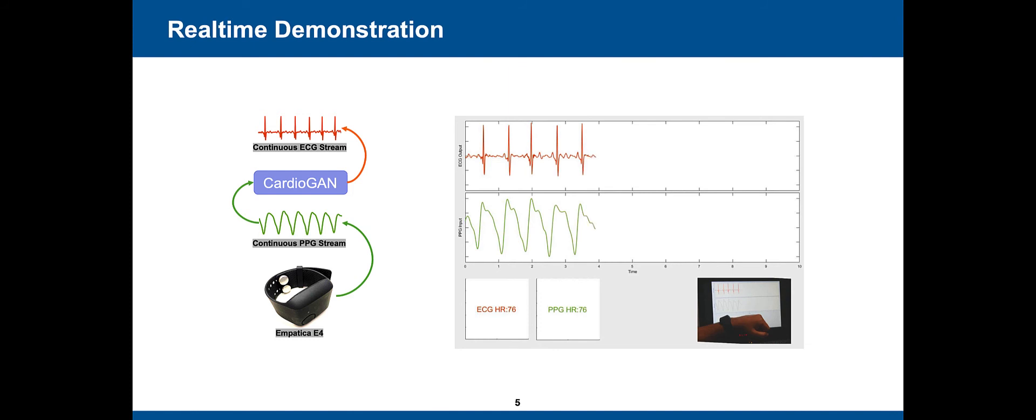CardioGAN then converts the incoming PPG to their corresponding ECG waveforms. The bottom plot shows the incoming real-time PPG, and the plot at the top shows the generated ECG outputs over a 10-second window.